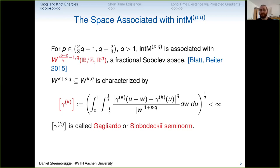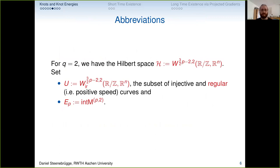For q=2 the fractional Sobolev spaces become Hilbert spaces, just as for integer Sobolev spaces. Our Hilbert space then boils down to W^{3/2·(p−2)/2, 2} over closed curves — a fractional Sobolev space — which we just call H for Hilbert space.